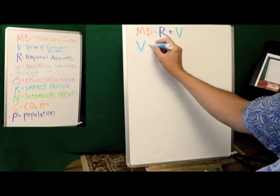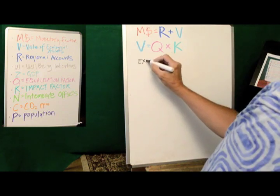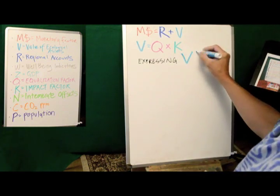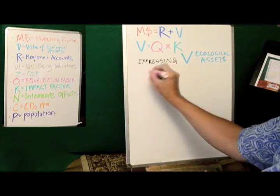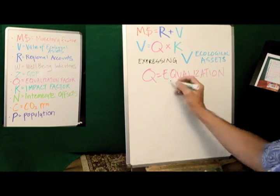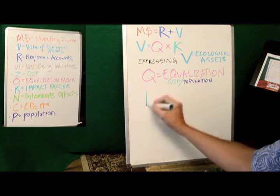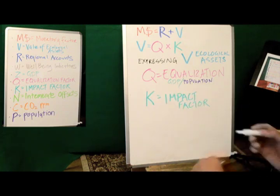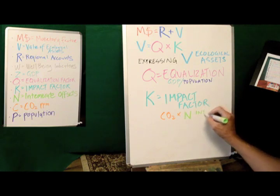Now let me express V, or the value of our ecological assets. V equals Q times K. Q equals equalization, which is GDP over population, or a kind of modified GDP per capita. K is the impact factor, which is the multiplier of CO2 and the Intemarate offsets, which I will later describe.